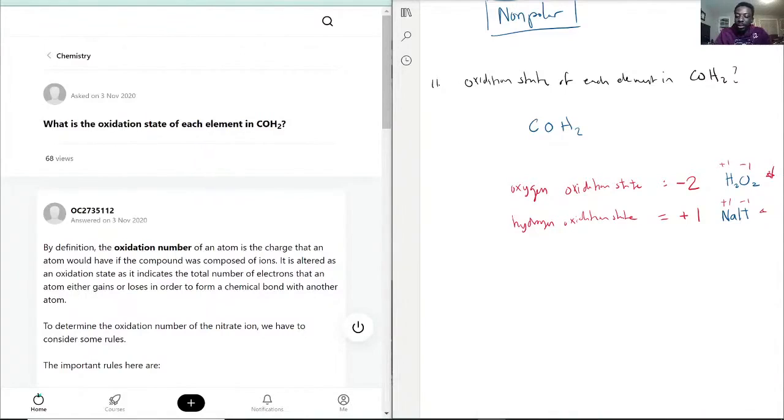These are the exceptions here, but typically it's gonna be minus two, plus one. So with that being said, when you look at this, we don't have any metals here, so that's good, and we have CO·H2. We do not have that peroxide - you need specifically that peroxide type of combination for that rule to apply.